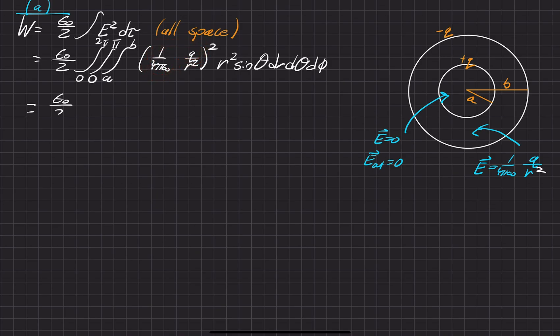So it'd be epsilon naught over 2, one over 4 pi epsilon naught times Q squared. And then the spherical terms are going to be equal to 4 pi. One over R squared squared, and then times R squared, R squared, DR. So now we just have to evaluate this integral.